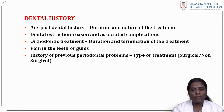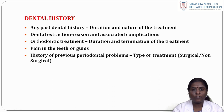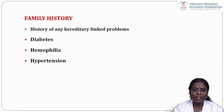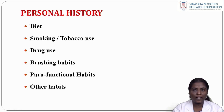Dental history: any past dental history should be recorded, including the duration and nature of treatment. If the patient has had extractions, recent and associated complications should be noted. In orthodontic treatment, the duration and termination should be recorded. History of previous periodontal problems and whether treatment was surgical or non-surgical should be documented. Family history helps to identify hereditary problems such as diabetes, hemophilia, and hypertension. Personal history includes diet, smoking or tobacco use, drug use, brushing habits, parafunctional habits and other habits.